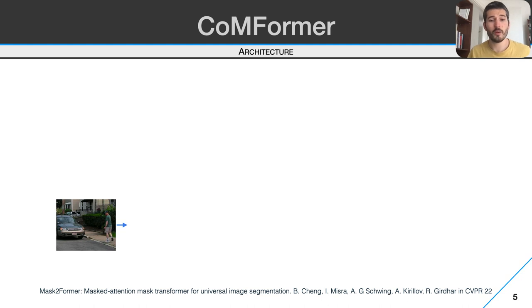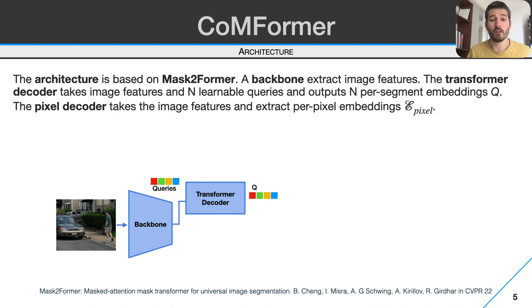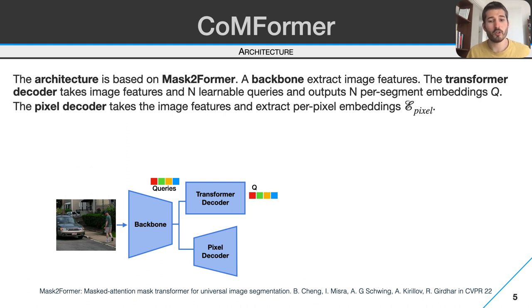To address the novel setting, we designed a novel method called CONFORMER. Its architecture is based on Mask2Former and is made of three components: the backbone, which may be a standard image classification network such as ResNet, that first extracts hierarchical image features. The image features and learnable queries are then processed by the transformer decoder, which outputs n per-segment embeddings. To generate fine-grained image features, crucial for good segmentation performance, a pixel decoder upsamples the backbone features to image resolution, extracting per-pixel embeddings.